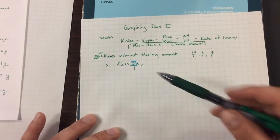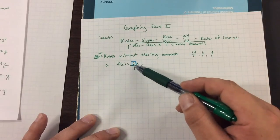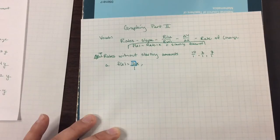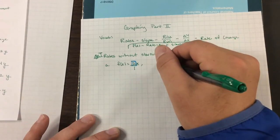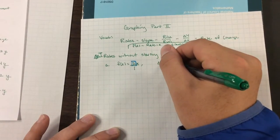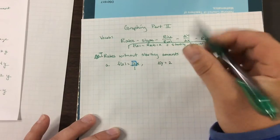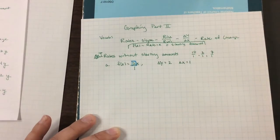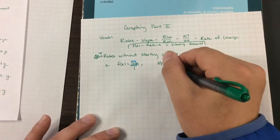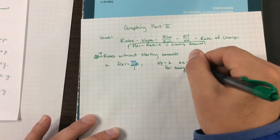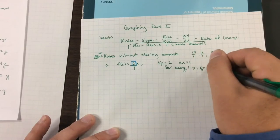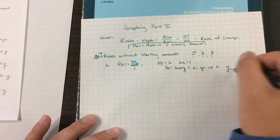But when we're talking about rates and it's a whole number, sometimes it's helpful for us to visualize that 1 there. So I'm going to write it. And then I'm going to be like, hey, the change in y equals 2, and the change in x equals 1. So what this means is for every 1x, go up 2y's.